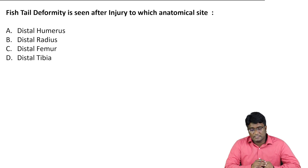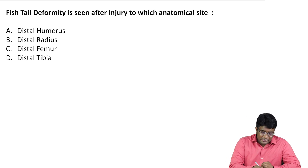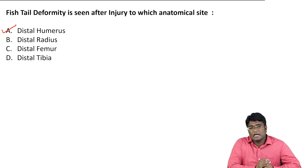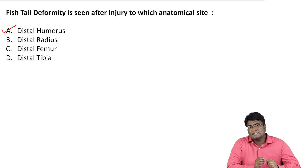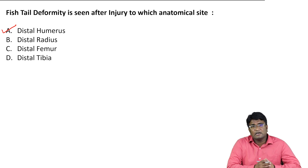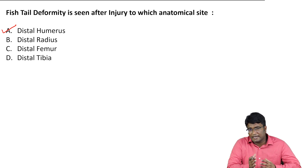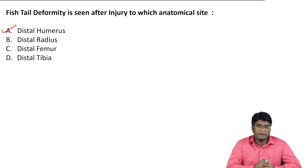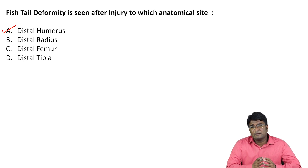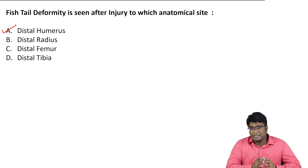The correct answer is distal humerus. Any distal humerus fracture — like a fracture of the supracondylar area, a lateral condyle fracture, or a medial condyle fracture — can lead to vascular injuries.